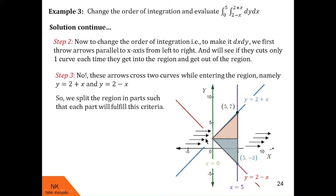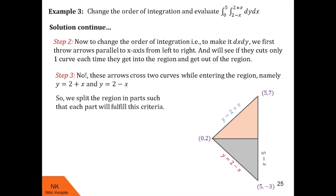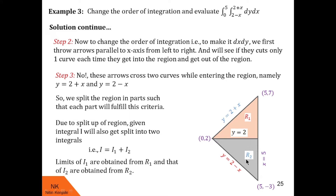So we divide this region into two parts. Let us enlarge this region. These are the vertices, and these are the equations of the corresponding curves. We call the upper region R1 and the lower one R2. Since we have split the region of integration into two, the integral I will also split into two integrals, i1 and i2. Limits of i1 are obtained from region R1 and limits of i2 from region R2.